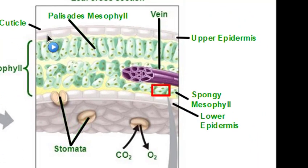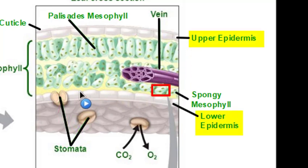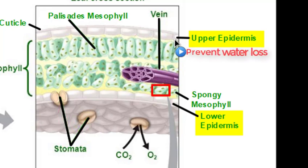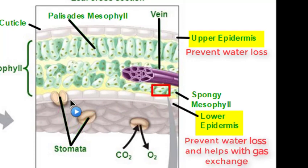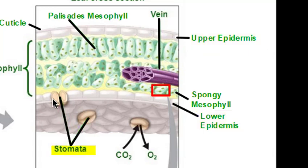Underneath the cuticle you have a layer called the upper epidermis, and on the bottom of the leaf there's a layer called the lower epidermis. The upper epidermis, like the cuticle, functions primarily to prevent water loss — because water is a reactant for photosynthesis. The lower epidermis does this as well, however it also contains structures called stomata. Stomata are openings at the bottom of the leaf, which means things can get in and things can get out.